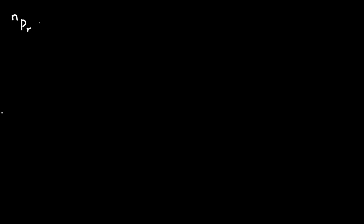You will remember that the permutation of n objects taking r at a time is defined as n factorial over n minus r factorial, where r is strictly greater than 0 but less than or equal to n.